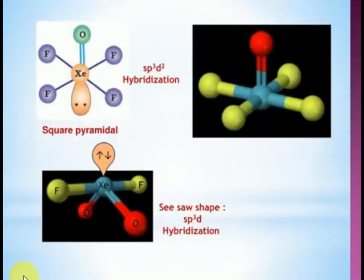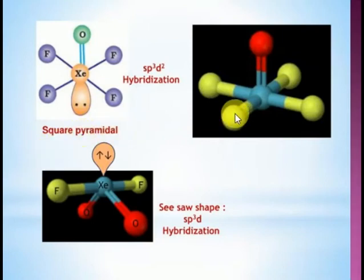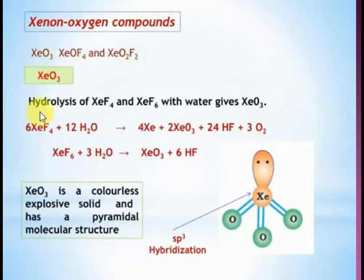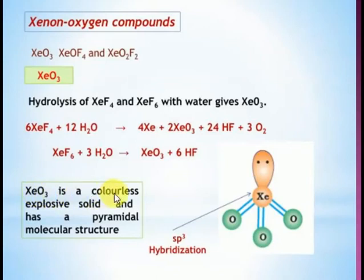Xenon oxygen compounds: xenon can react with both oxygen and fluorine. When xenon tetrafluoride or hexafluoride reacts with water, they form xenon trioxide (XeO₃), xenon oxyfluoride, and xenon tetroxide (XeO₄). XeO₃ is prepared by hydrolysis of xenon tetrafluoride or hexafluoride. Xenon trioxide is a colorless explosive solid with pyramidal structure — similar to ammonia, sp³ hybridization, with one lone pair and three oxygen atoms.